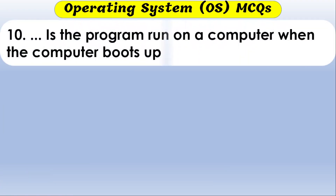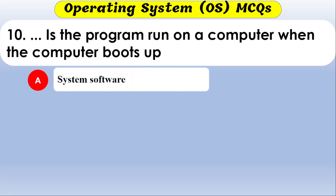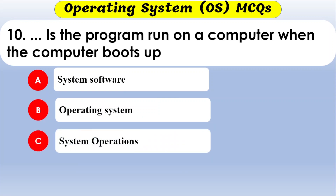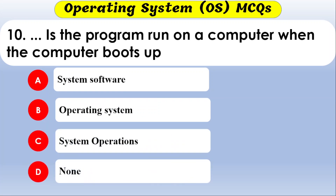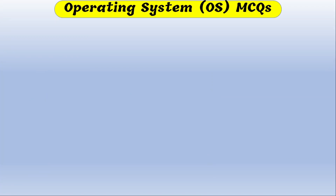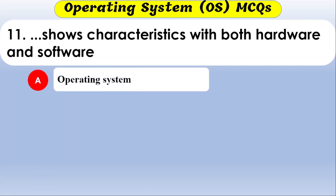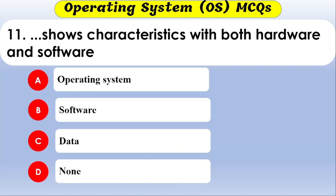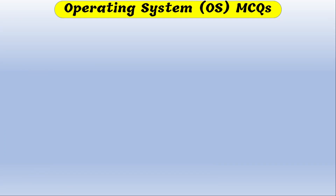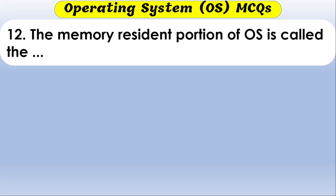The program that runs on a computer when the computer boots up — the options include system software and operating system. The correct option is operating system — it is the program that runs when the computer boots up.